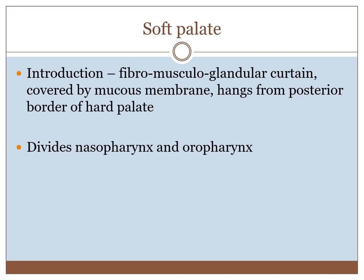The soft palate will be described under the following heads: introduction, formation, the muscles forming the soft palate, nerve supply, blood supply, and applied anatomy. The soft palate is a fibromuscular and glandular curtain covered by mucous membrane that hangs from the posterior border of the hard palate. It divides the nasopharynx from the oropharynx.